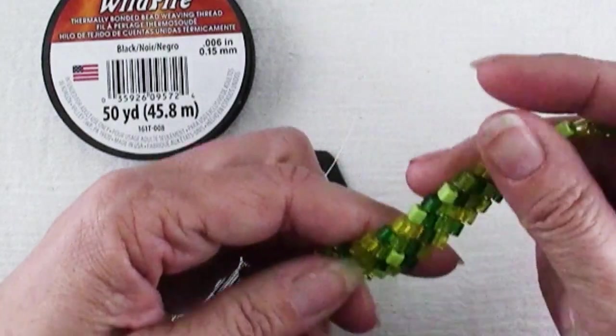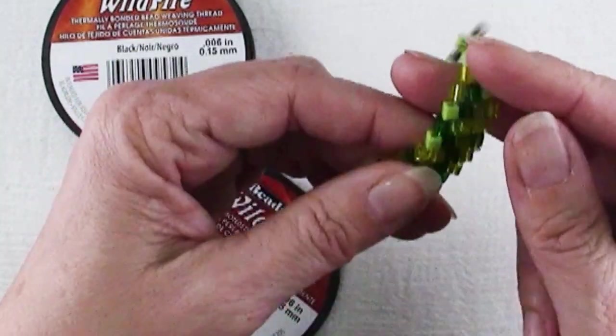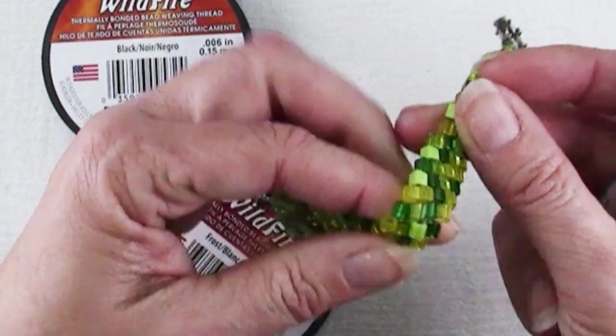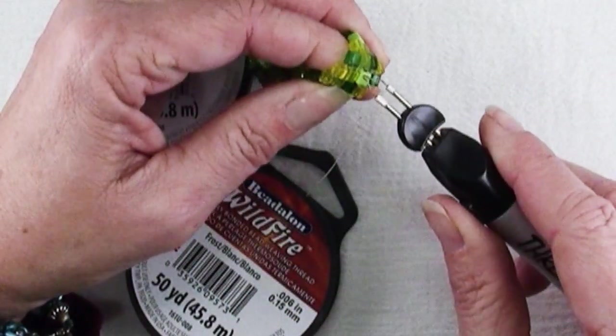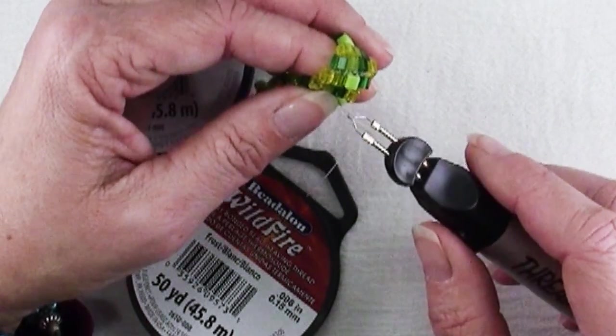You don't want to leave it on too long unless you're intending to and you're being very careful. If you were doing something like a piece of jewelry, which is what this is made for, is to take care of those thread ends. If you leave it on too long you risk melting threads that you want to keep and destroying your whole piece.